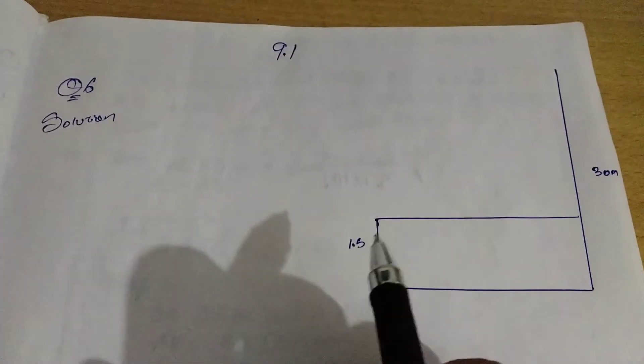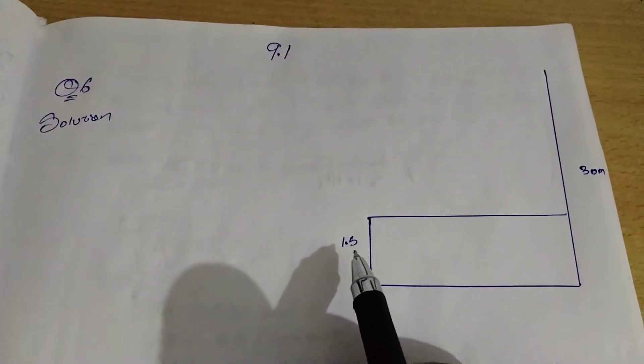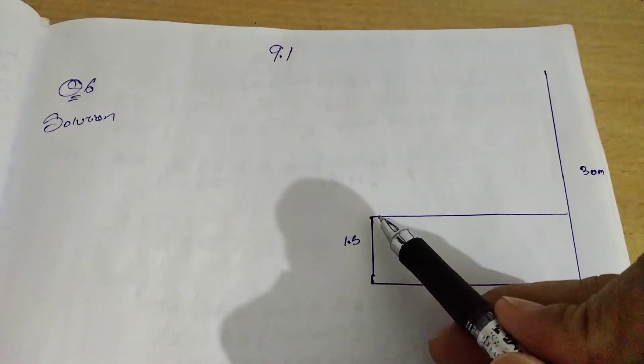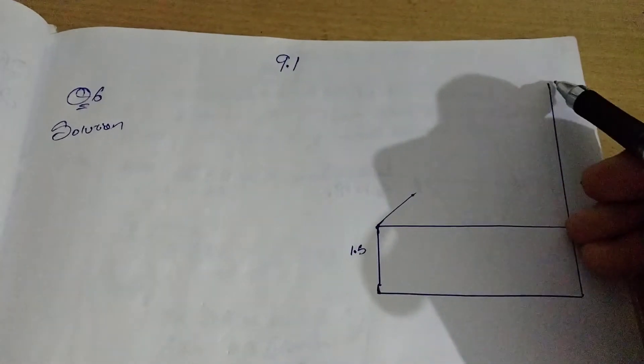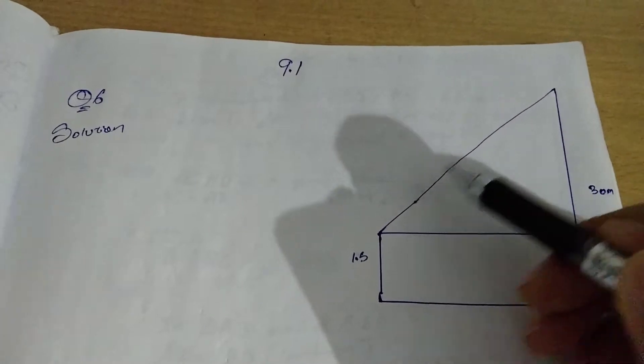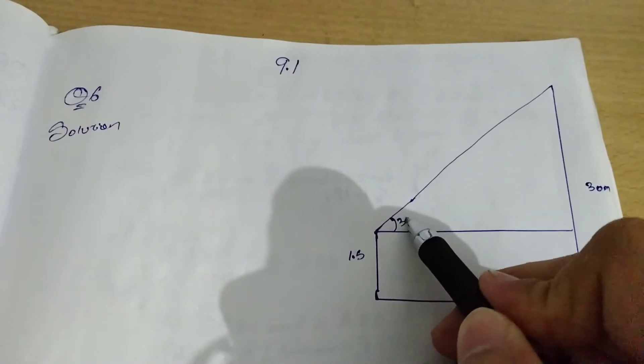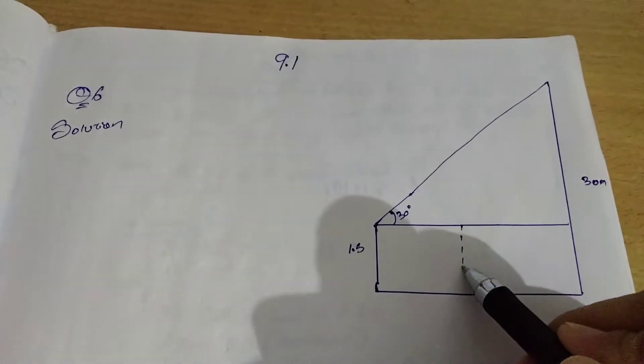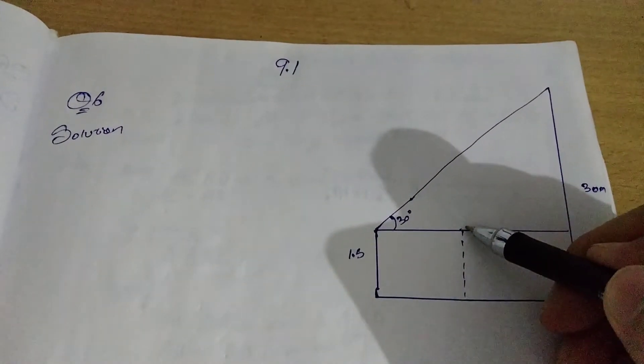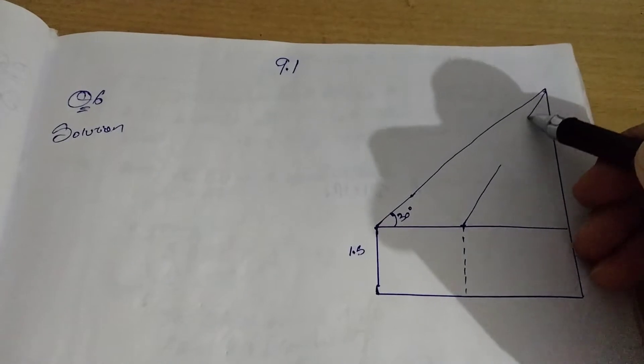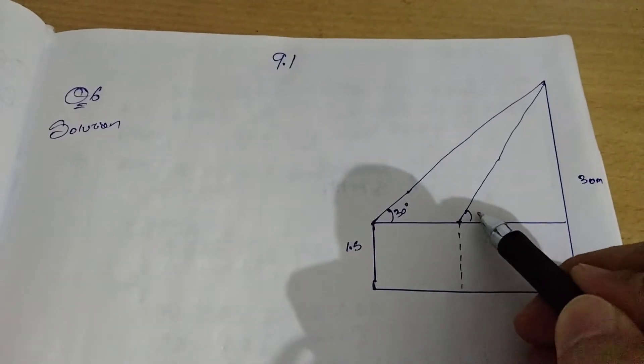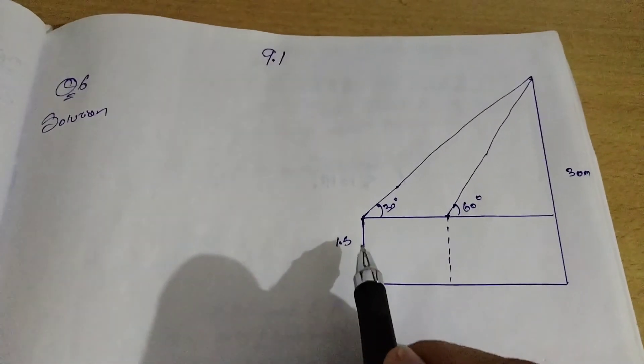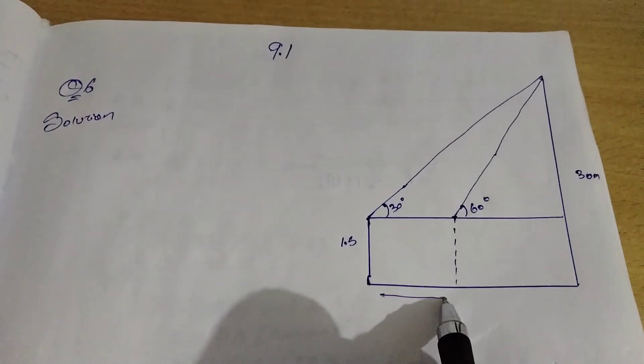After reading the question, I was able to figure out that the height of the boy is 1.5 and the height of the building is 30 meter. Now when the boy is at this point and views the top of the building, the angle of view from his eyes is at 30 degree. As he comes towards the building, the view of his eyes towards the building becomes 60 degree. The question is asking us to find out the distance from this point to this point.